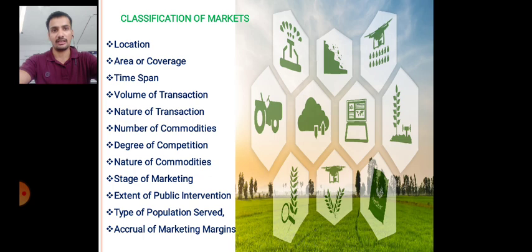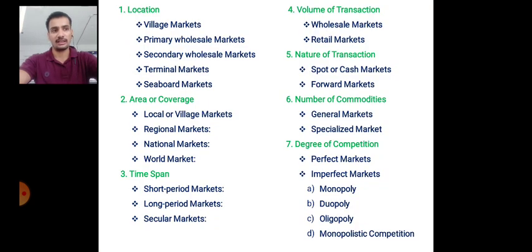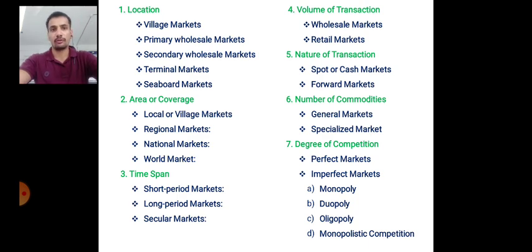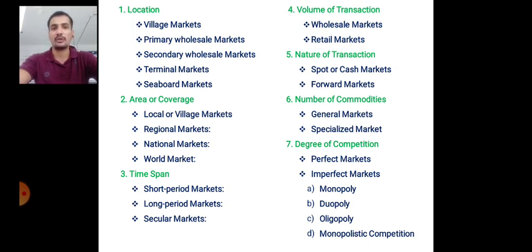We will now see each one by one. The first classification is based on location. Markets based on location are classified into five subtypes: village market, primary wholesale market, secondary wholesale market, terminal market, and seaboard market. Village market refers to markets that exist in a rural or village area. Primary wholesale market is the market in which the volume of transaction is larger than the village market.